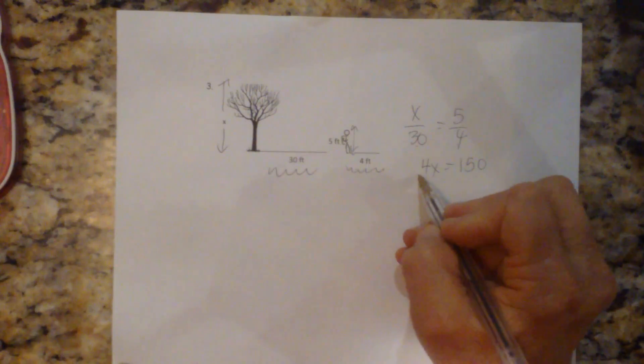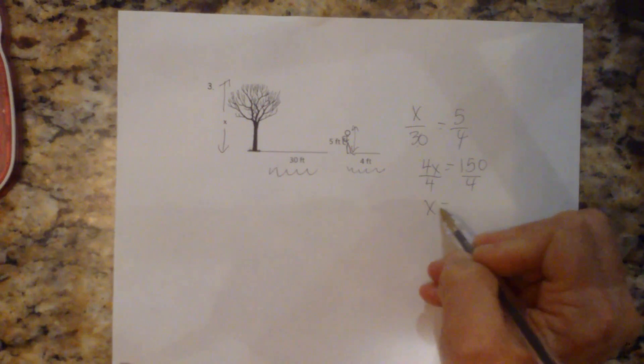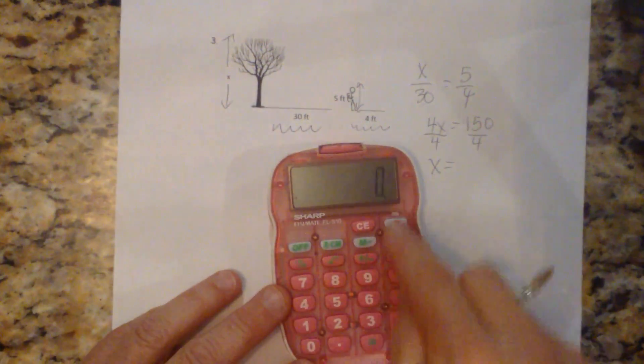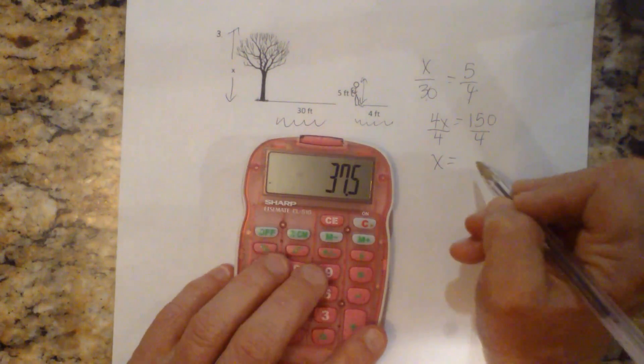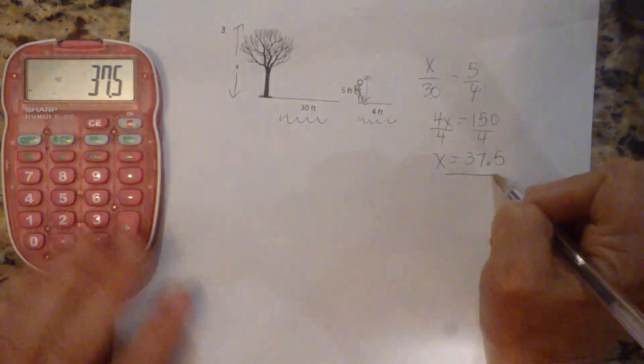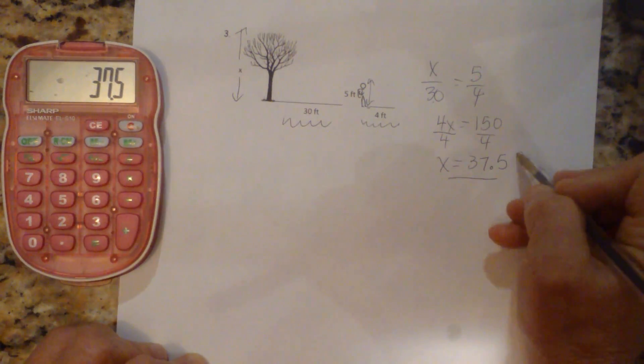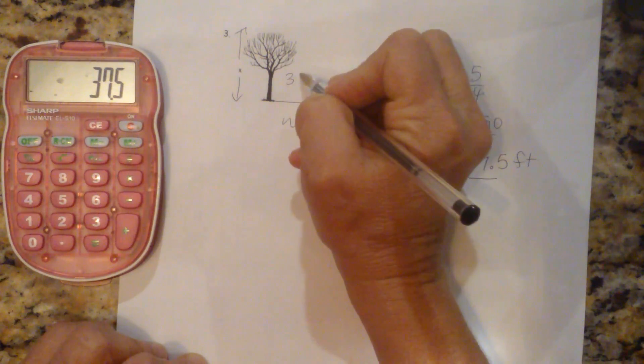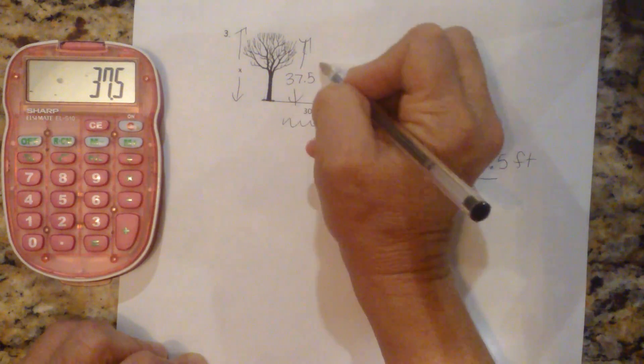Let's divide both sides by 4 to solve for x. So x is equal to 150 divided by 4. And that's 37.5. And then let's look at this unit measure. All these are in feet. So that's going to be feet. So 37.5 feet represents the height of the tree.